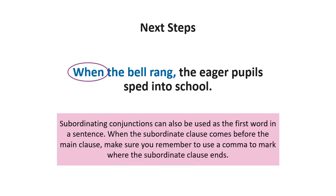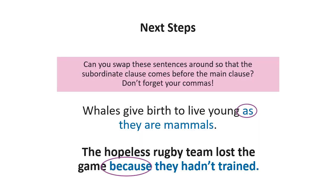The subordinating conjunction always starts the subordinating clause. When the subordinating clause comes before the main clause, make sure you use a comma to mark where the subordinating clause ends — like 'When the bell rang, the eager pupils sped into school.' Now can you swap these sentences around so the subordinating clause comes first? 'Whales give birth to live young as they are mammals' and 'The hopeless rugby team lost the game because they hadn't trained' — don't forget your commas.